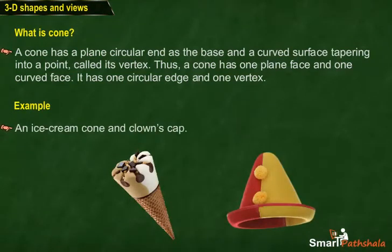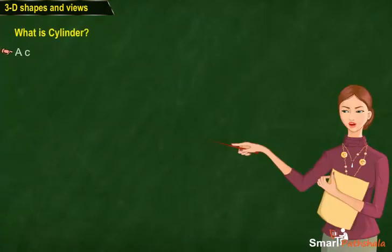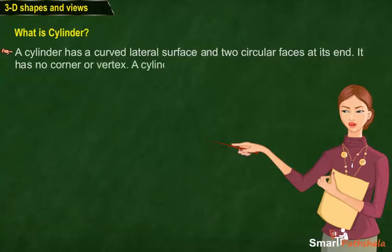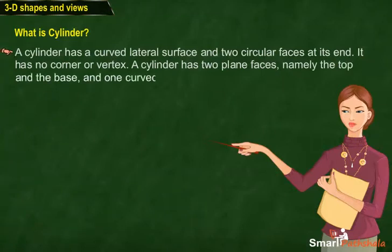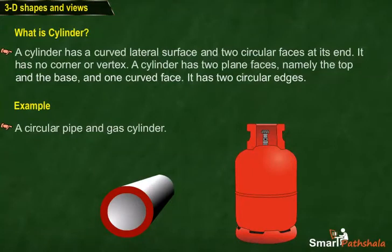Students, let's learn what is a cylinder. A cylinder has a curved lateral surface and two circular faces at its end. It has no corner or vertex. A cylinder has two plain faces, namely the top and the base, and one curved face. It has two circular edges. Examples include a circular pipe and gas cylinder.